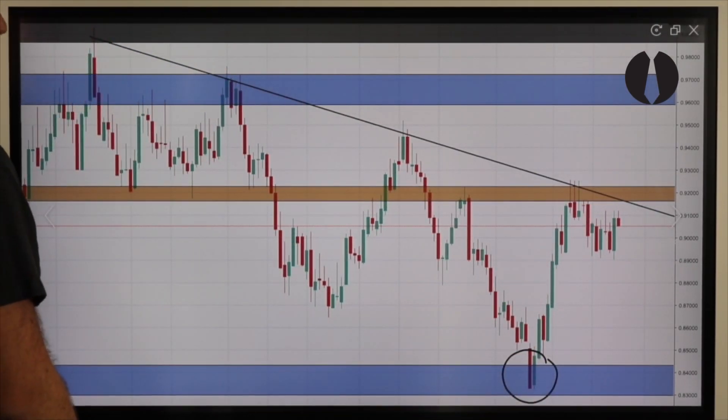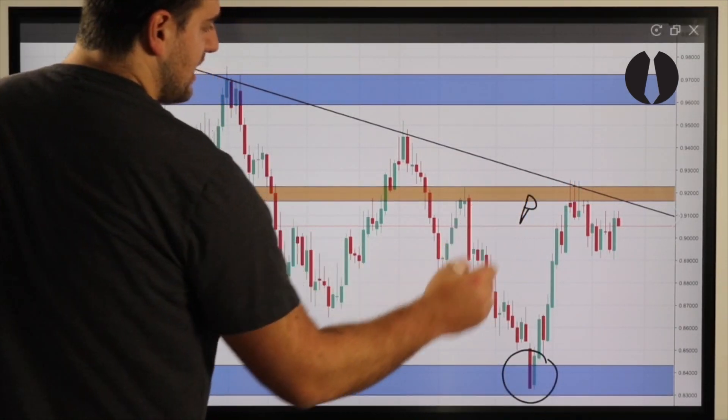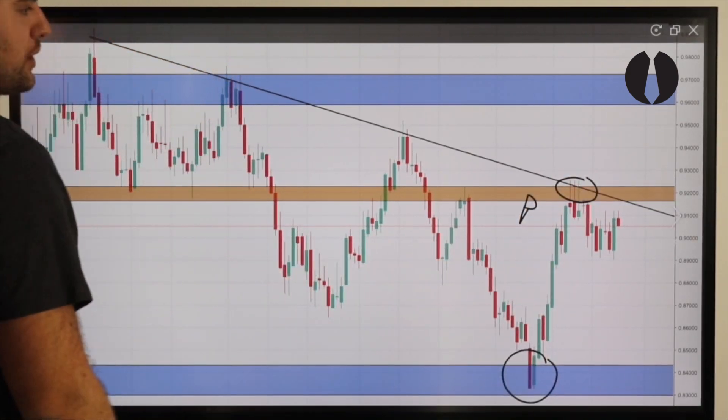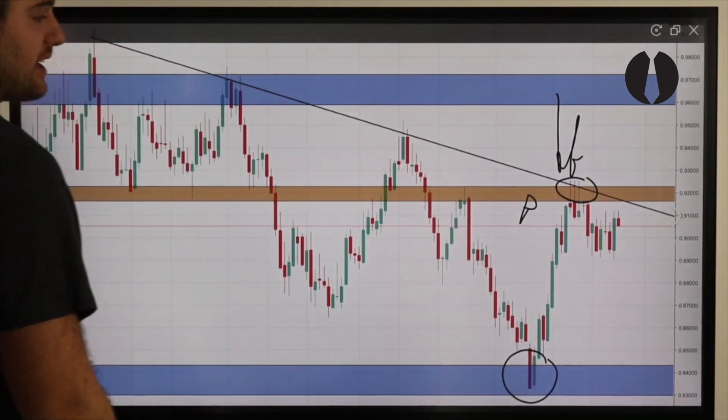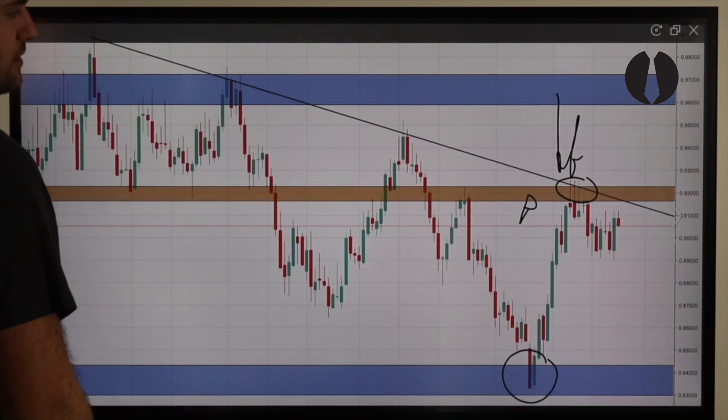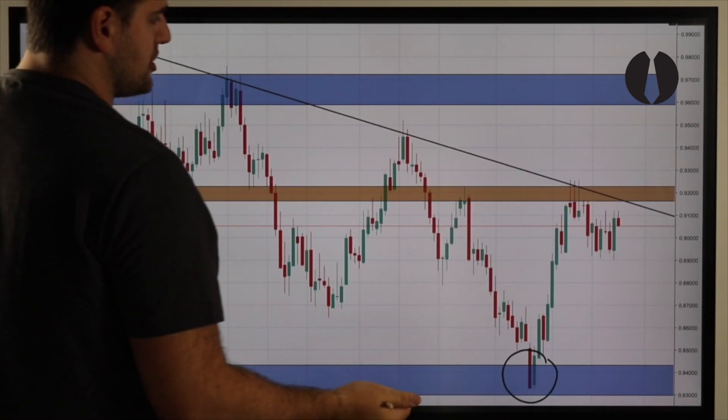Now we have to understand the story that the weekly is telling us. Here's that strong move off our bottom monthly zone. This is a significant move as we talked about, which means it was a push. Our push ended at our weekly mid-range zone and our downtrend. As expected, this is where we can expect sell orders to enter the market to begin exhaustion.